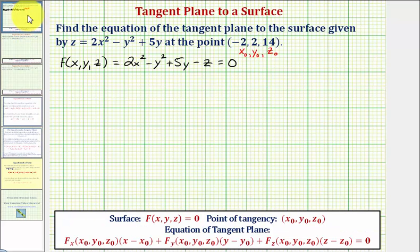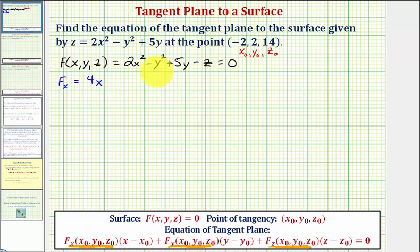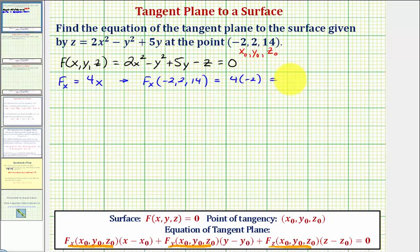For our next step, we'll determine our partial derivatives with respect to x, y, and z, and then evaluate them at the point of tangency. The partial with respect to x will treat the y and z terms as constants. The derivative of two x squared with respect to x would be four x; the remaining derivatives with respect to x would be zero. Evaluating at the point of tangency, negative two, two, fourteen, gives us four times negative two, which equals negative eight.